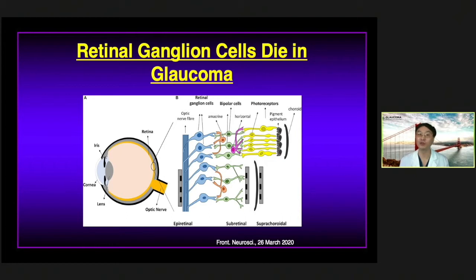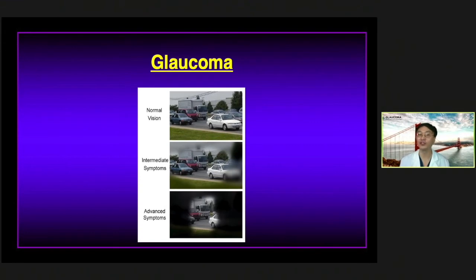Vision loss usually starts in the peripheral vision, but it can constrict and then cause loss of central vision as well, and ultimately all of your vision. In the intermediate stage you will have loss of peripheral vision, and in the end you can have tunnel vision and complete loss of vision in glaucoma.